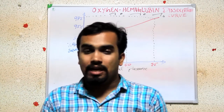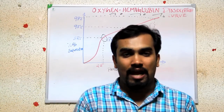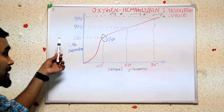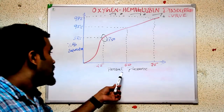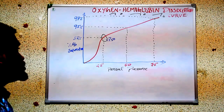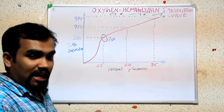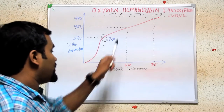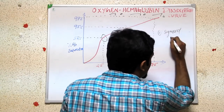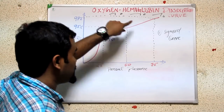Normally, a male has 16 grams of hemoglobin per deciliter in his blood and a female has 14 grams per deciliter. This curve has percentage of hemoglobin saturation on the Y-axis and partial pressure of oxygen on the X-axis. First of all, we have to know that there is no 100% hemoglobin saturation. This curve is known as a sigmoid curve, and we use the terms left shift and right shift.